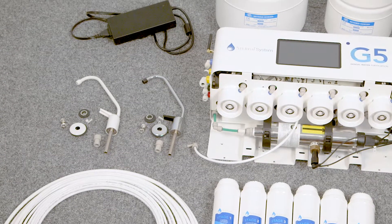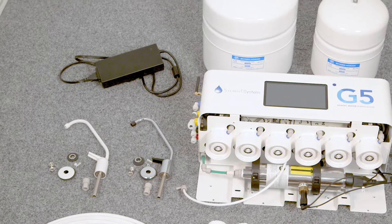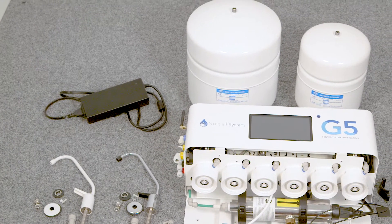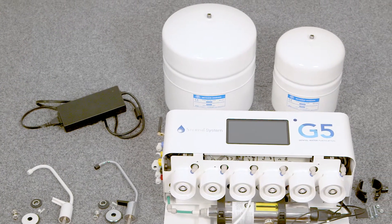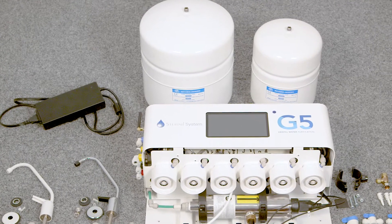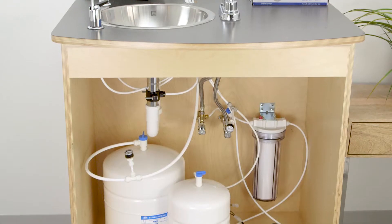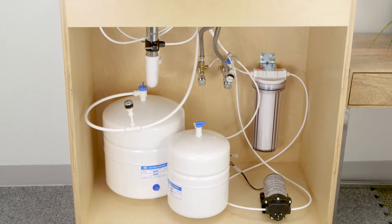Water storage tanks. The standard G5 configuration includes a four gallon reverse osmosis tank and a two gallon dental tank. These sizes may differ with customer specifications and needs. As a default, the RO storage tank will be the larger of the two.